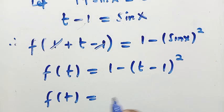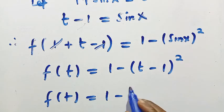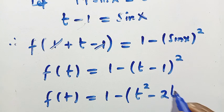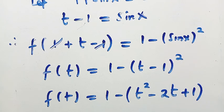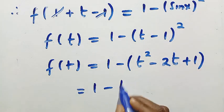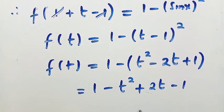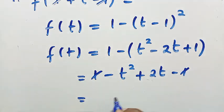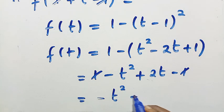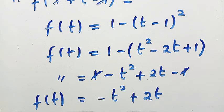We expand t minus one squared to get t squared minus two t plus one. Opening the bracket with the negative sign gives one minus t squared plus two t minus one. The plus one and minus one cancel, leaving us with f of t equals minus t squared plus two t.